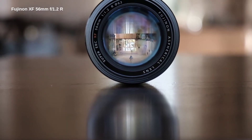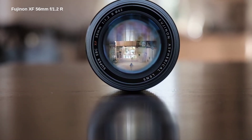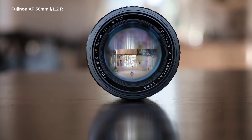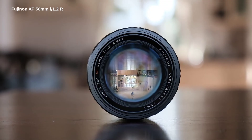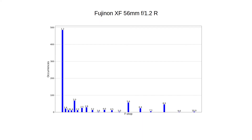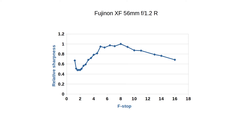The Fuji XF 56mm f1.2R is my brightest, sharpest, and probably most remarkable lens. It's an exceptional portrait lens with beautiful bokeh. As you can see from my usage, I tend to shoot wide open at f1.2 almost exclusively. While it can certainly handle landscapes, its main appeal is in its wide-open capabilities. If you don't own this lens yet, I highly recommend it — it's truly wonderful. Its sharpness profile is unsurprising once you've seen those of the other Fuji primes.